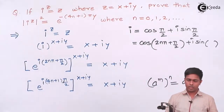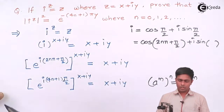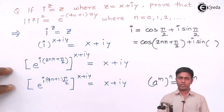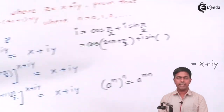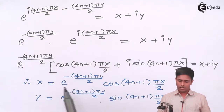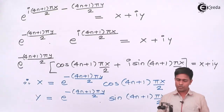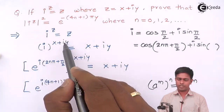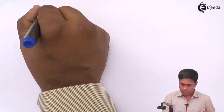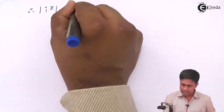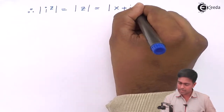Now going back to the question: we need the square of the modulus of i raised to z. Since i^z equals z, and z equals x plus iy, we have |i^z| equals |z|, which equals |x + iy|, which equals the square root of x² plus y².